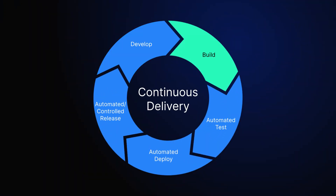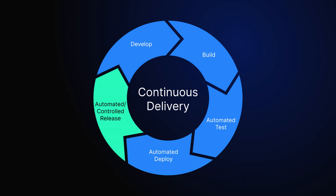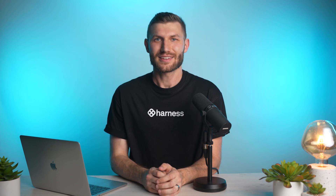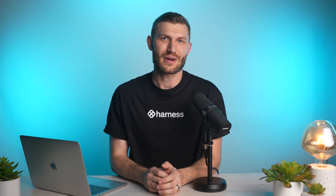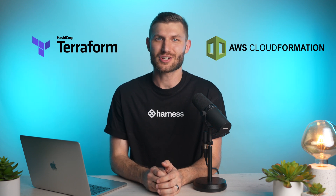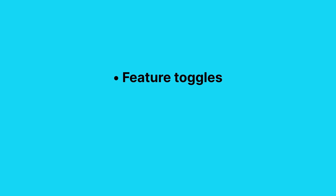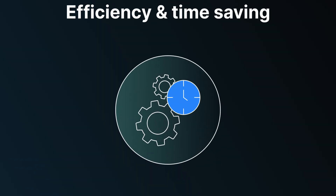Next, let's explore continuous delivery. CD automates deploying software to production environments, aiming to deliver new features, bug fixes, and improvements quickly and reliably. CD relies on automated testing, infrastructure provisioning, and release management practices. Tools like Terraform or AWS CloudFormation define and manage infrastructure resources, ensuring consistent setups across environments. Release management practices like feature toggles and canary releases mitigate deployment risks, enabling gradual rollouts and quick rollback if needed. The benefits of CD include faster time to market, improved software stability, and a culture of continuous improvement and learning within development teams.